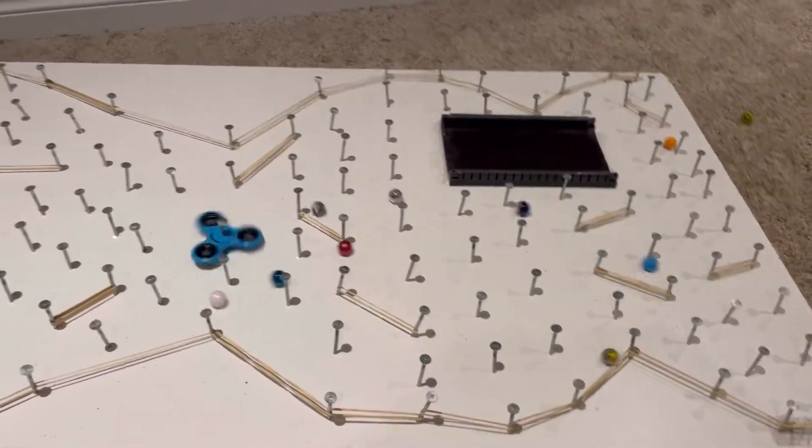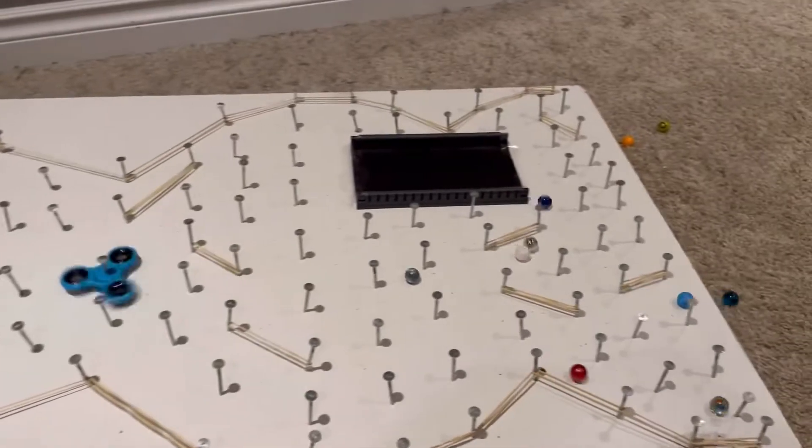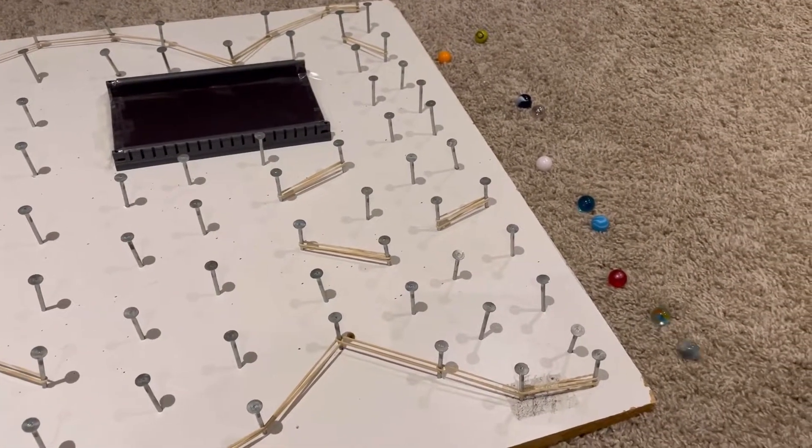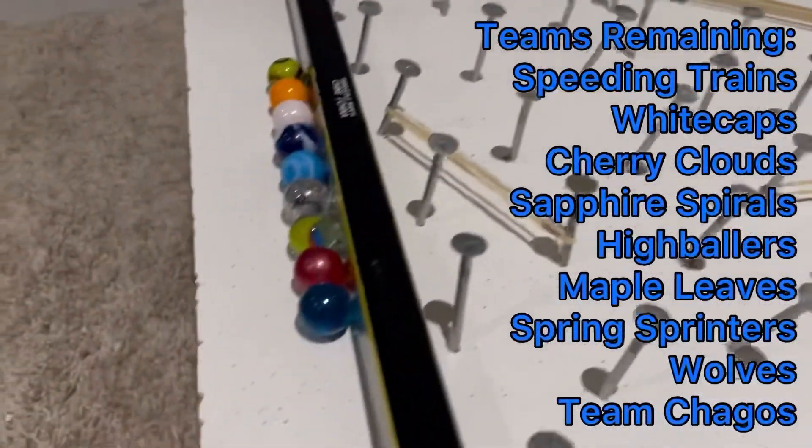You could see them on the near side of this course just pinballing around, hitting too many nails, and Maple Leafs were able to get across before them. Nine remain.